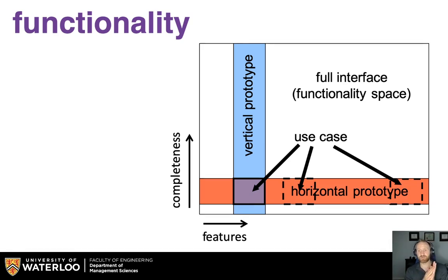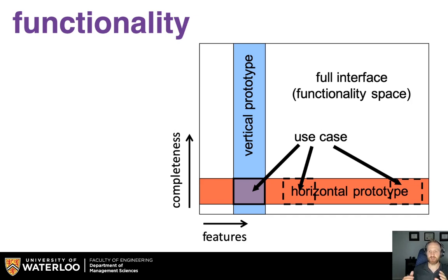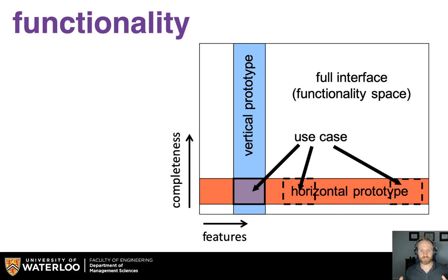If you end up having all use cases covered and fully complete, you end up with a final system or an extremely high-fidelity prototype. This approach allows you to trade off different scopes of your system — using a horizontal prototype to illustrate what the product will be capable of when done, while walking people through the most essential use cases to make sure you're getting those things right.